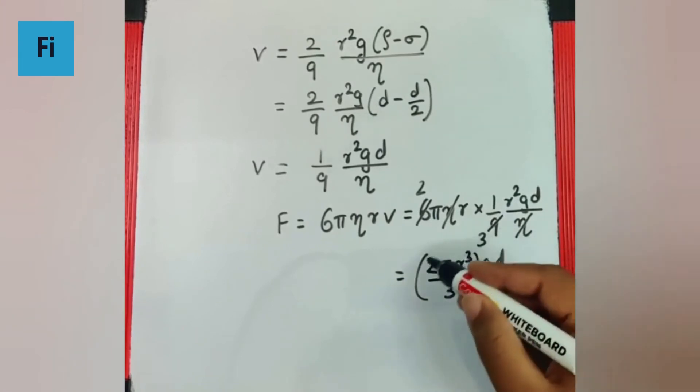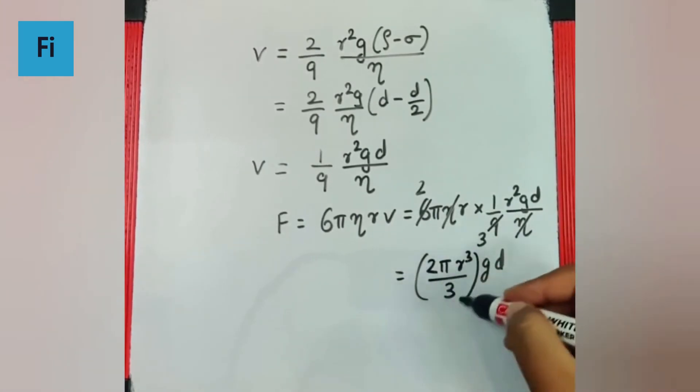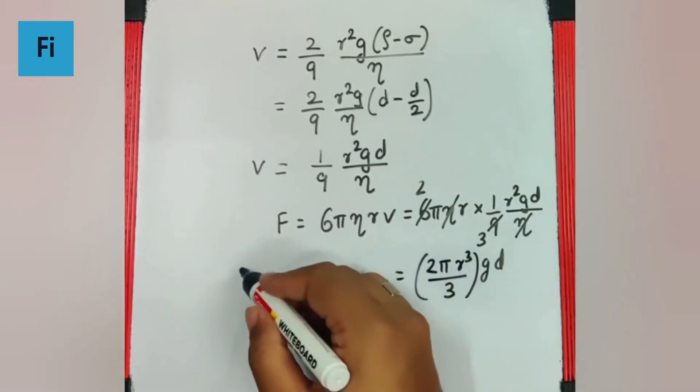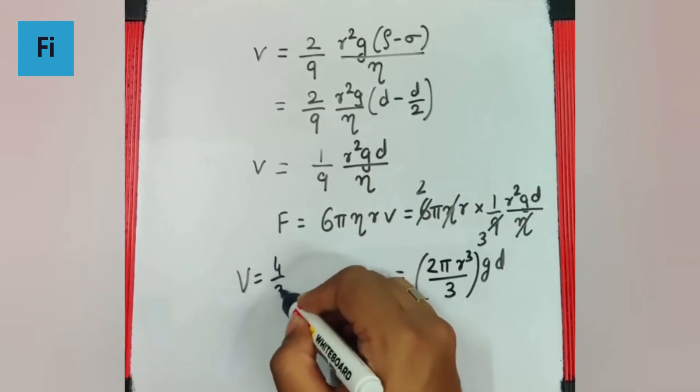So now you have to understand this is nothing but half of the volume of a ball because the volume of the ball is 4 by 3 pi R cube.